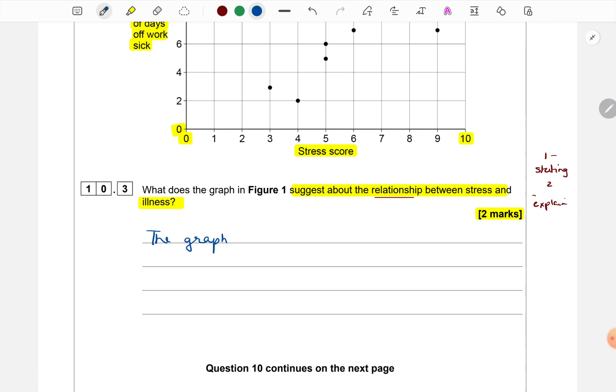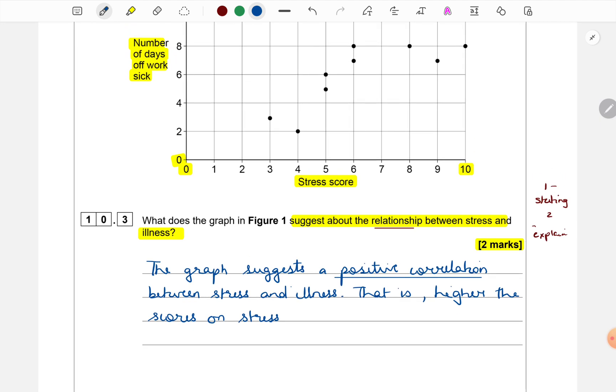The graph suggests there is a positive correlation between stress and illness that is higher the scores on stress, greater are the number of days off from work sick.